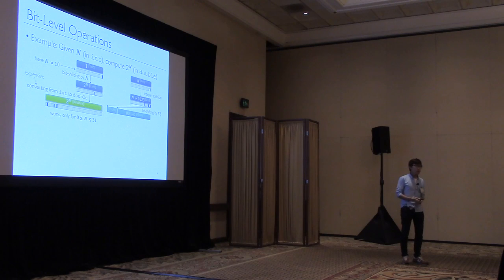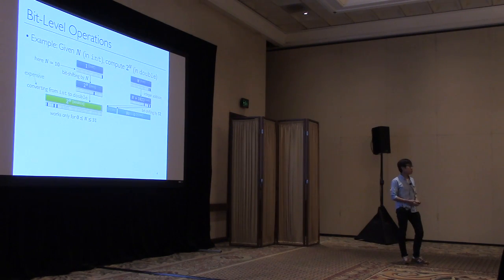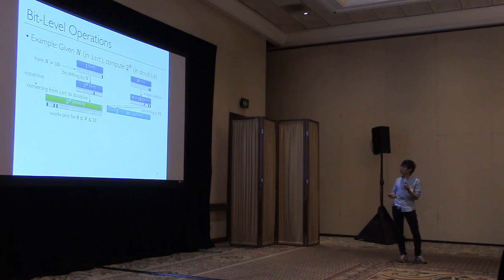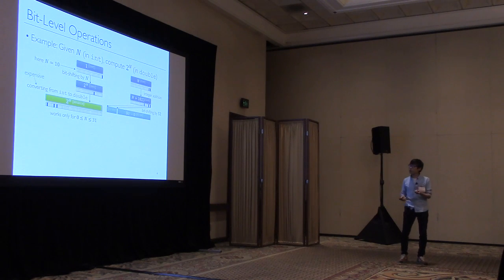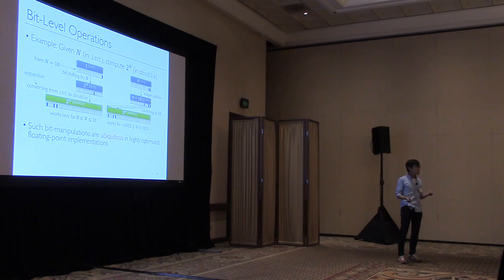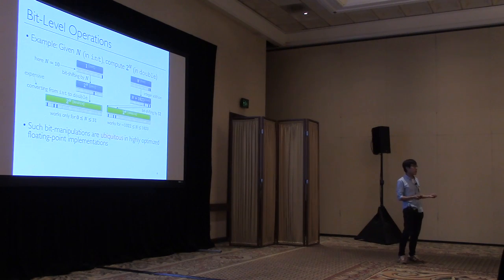The right picture shows a better and more efficient way to compute 2 to the n, and it is the way people usually use in practice. The right approach first does an integer addition to get n plus 1023, and then does a bit-shift. Then magically, the final 64 bits are equal to 2 to the n in double representation. And this approach works for a wider range of inputs. This kind of bit-manipulation is widely used in real-world floating-point programs, especially in highly optimized code.